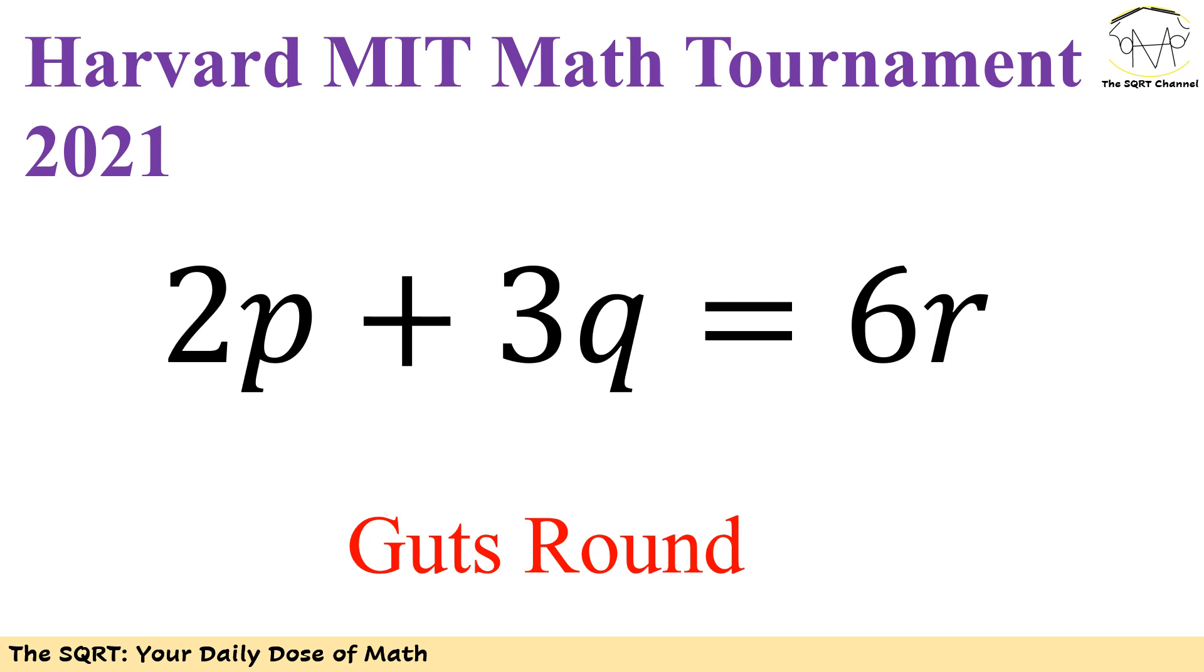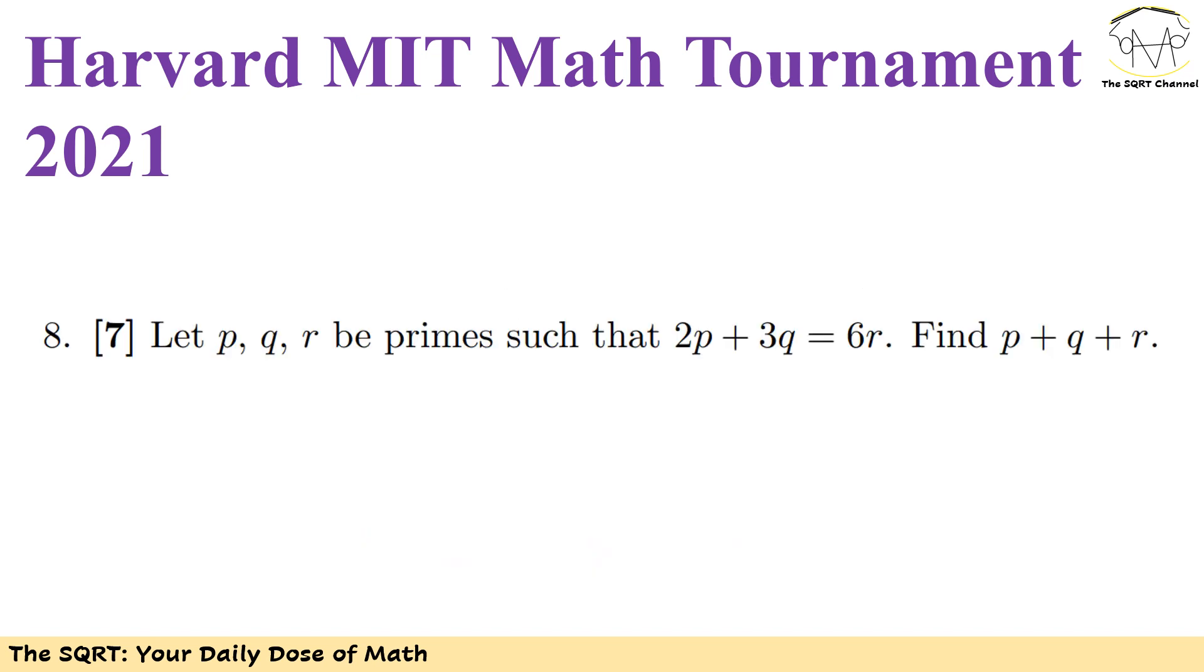Let's see what the problem is here. It says let p, q, and r be primes and we have 2p plus 3q equals 6r. We are going to find p plus q plus r.